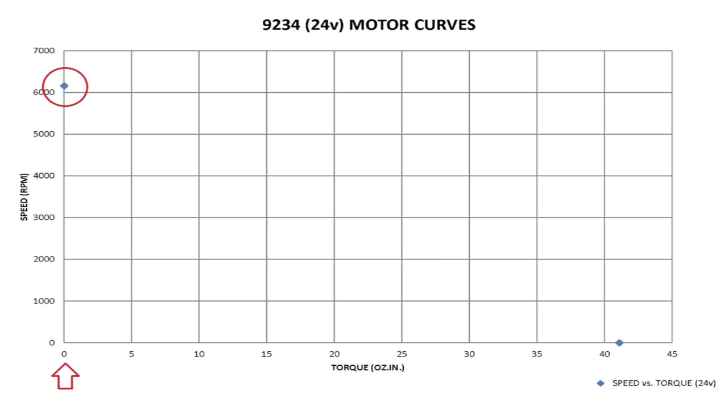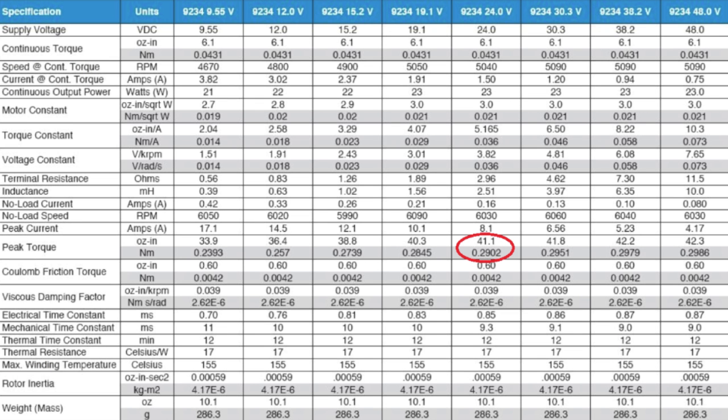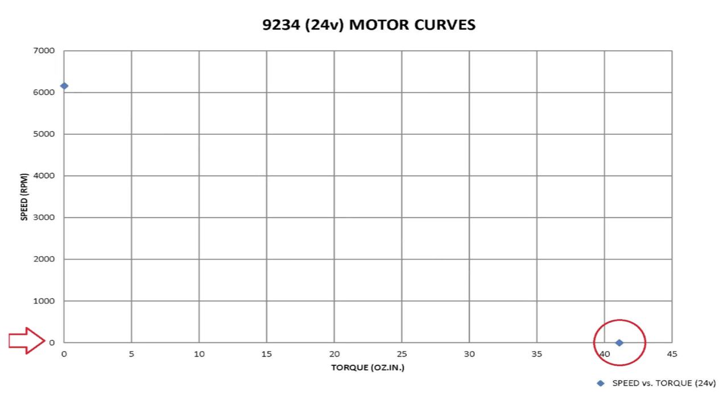This is the value we just calculated. The peak torque for this motor is found in the catalog data sheet. The end point of our speed torque line terminates on the torque axis, which is also where the speed is zero. The peak torque generated is when the motor is in a stalled condition.